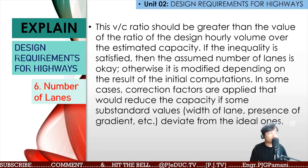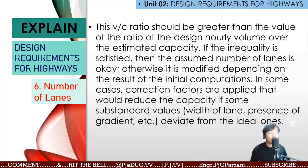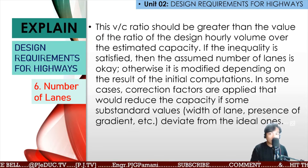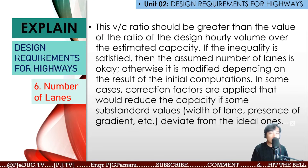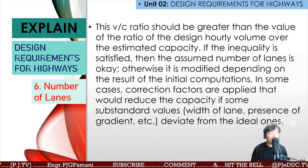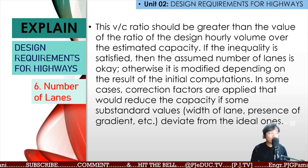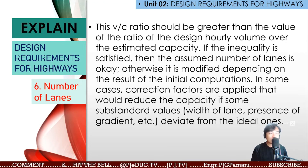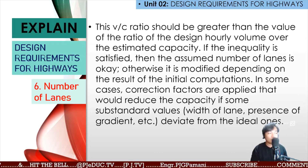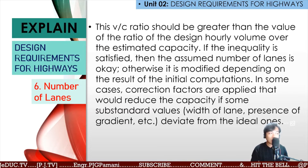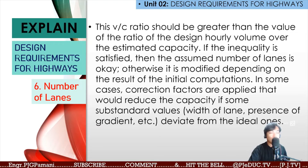If the inequality is satisfied, then the assumed number of lanes is acceptable; otherwise it is modified depending on the result of the initial computations. In some cases, correction factors are applied that reduce the capacity for substandard values — such as lane width, presence of gradient, and so forth — that deviate from the ideal.